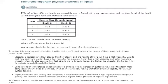Here we got the second example of this topic, and here we have a little bit of different information. We've got 173 milliliters of two different liquids poured through a funnel with a narrow exit tube, and the time for all of the liquid to flow through is recorded. Here are the results.